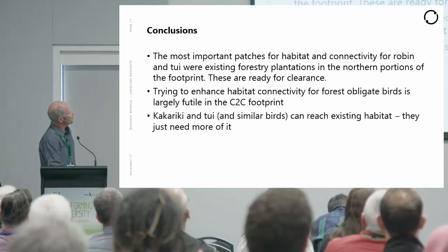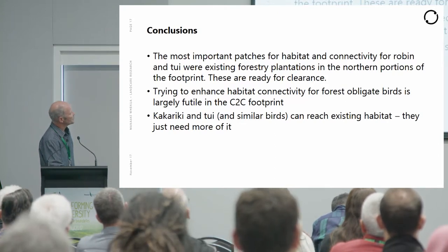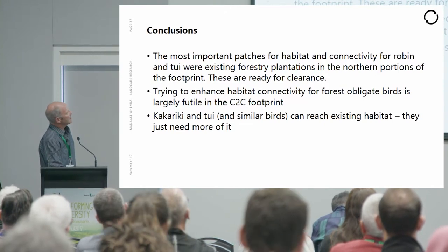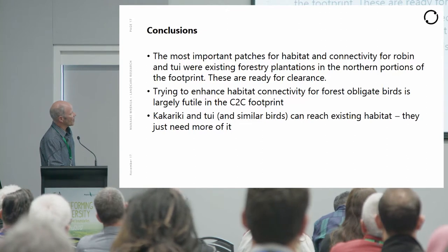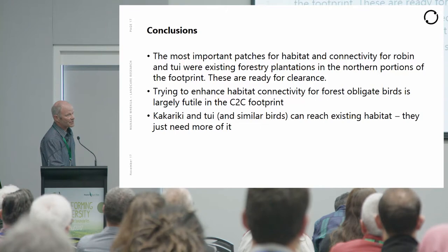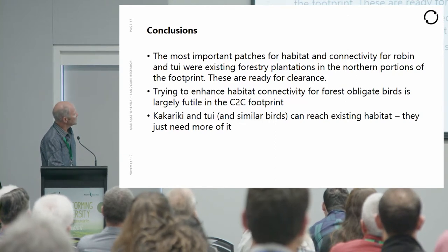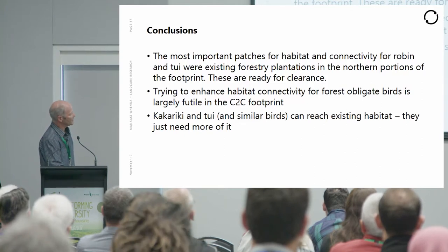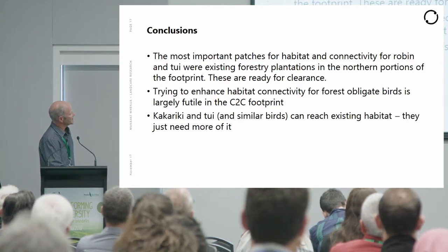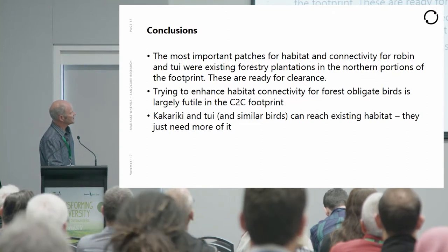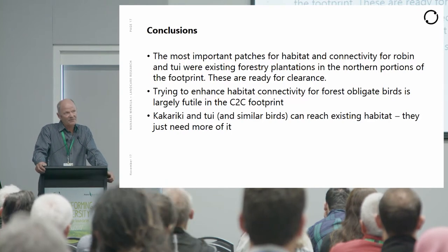The conclusions are: the most important patches for Robin and Tui were existing forestry plantations in the northern portions of the footprint — and those are currently being cleared. Trying to enhance connectivity by planting between patches for obligate forest birds is largely futile in the Cape to City footprint — this applies particularly to Robin. For Kakariki and Tui, which can reach existing habitat, the recommendation is to focus on creating more and better quality habitat rather than trying to link up patches.